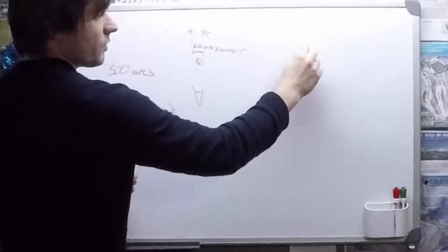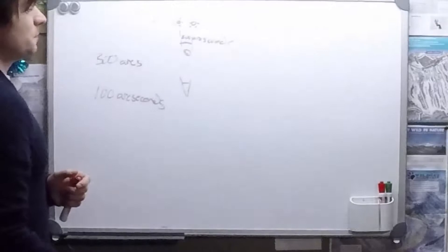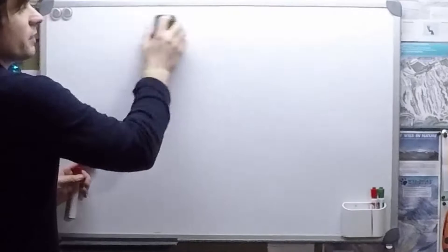Essentially, the angular resolution is just the smallest angle that the telescope can see between two objects without them becoming blurred. So, if the angle is lower than your angular resolution, you're going to get a very blurry image. So, how does that apply to this lab?